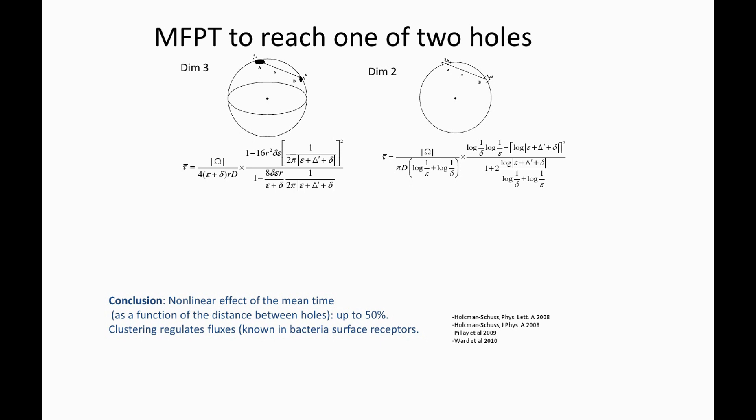This is about what happens when the particle, the Brownian particle which is inside here, can escape either at one hole, this is hole A, or at a second hole, which is labeled here by B. It's dimension 3, and you have the same in dimension 2. We will see that this is the formula, the asymptotical formula. The main difference is that the distance between the two holes, delta, enters into the game.